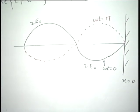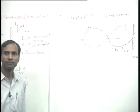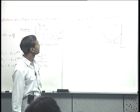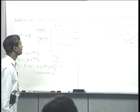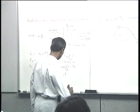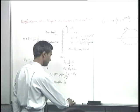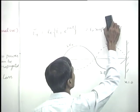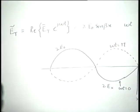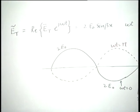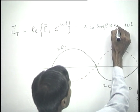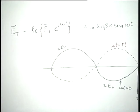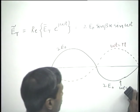A student points out that due to the factor of j in the phasor expression, the time varying result should be sin(beta x) sin(omega t) rather than cos. This correction is accepted. The corrected plot has omega t equal to pi by 2 corresponding to maximum field and omega t equal to minus pi by 2 corresponding to the negative maximum. The node spacing between adjacent node points is lambda by 2.